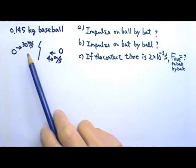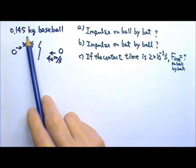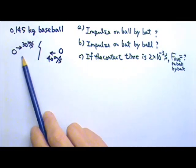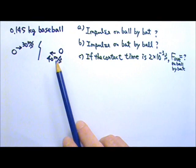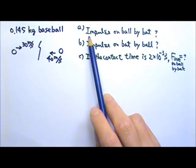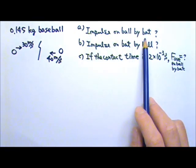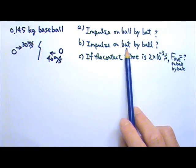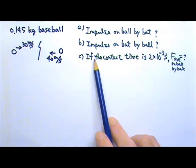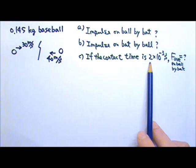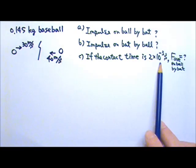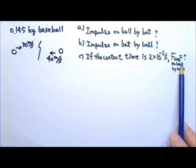Now let's look at an example. A 0.145 kg baseball pitched at 30 meters per second gets hit straight back at 40 meters per second. Find the impulse on the ball by the bat, and the impulse on the bat by the ball. And if the contact time between the bat and the ball is 2 × 10⁻³ seconds, find the average contact force on the ball by the bat.